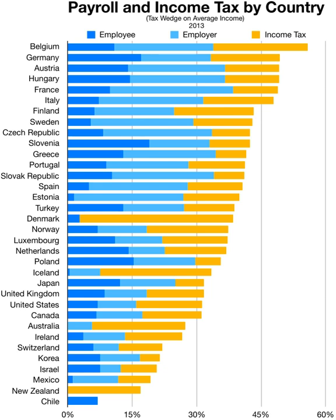Public disclosure of personal income tax filings occurs in Finland, Norway and Sweden as of the late 2000s and early 2010s.